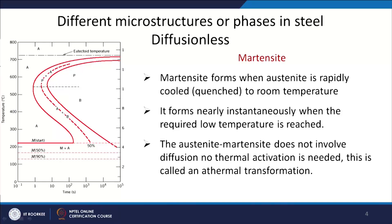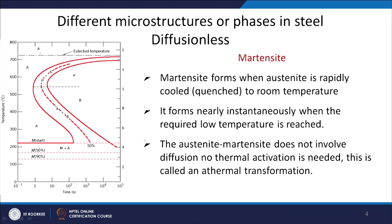One of the very important phases in steel is called martensite. It is a diffusionless transformation — there is no confusion here; it is going to be diffusionless. Martensite forms when austenite is rapidly cooled (quenched) to room temperature. If you do very fast cooling, the austenite transforms to martensite, and it forms nearly instantaneously when the required low temperature is reached. This is how a TTT diagram will look — we will go into detail, but I just wanted to show what martensite will be doing. You have to have a very high cooling rate.